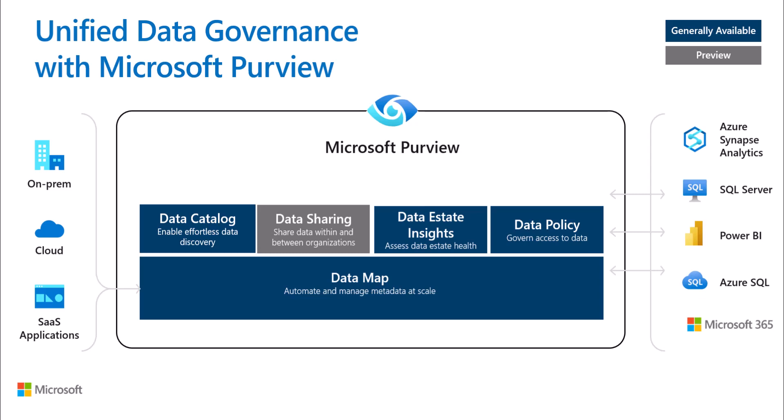Once that map has been created, you can run different apps on top of it: the data catalog, data sharing, data estate insights, and data policy. We're going to focus on data policy, which is used to provision and govern access to the data.